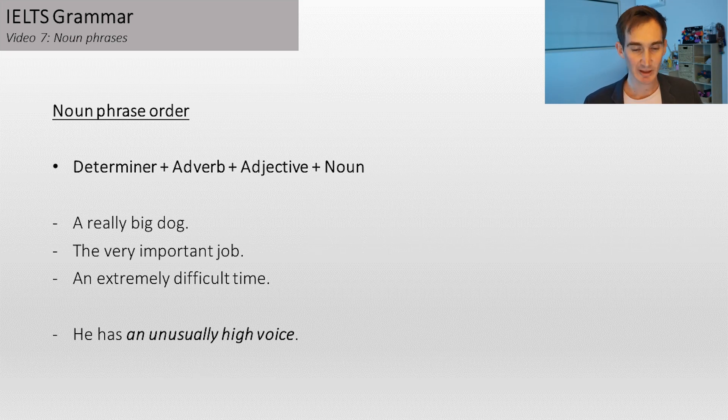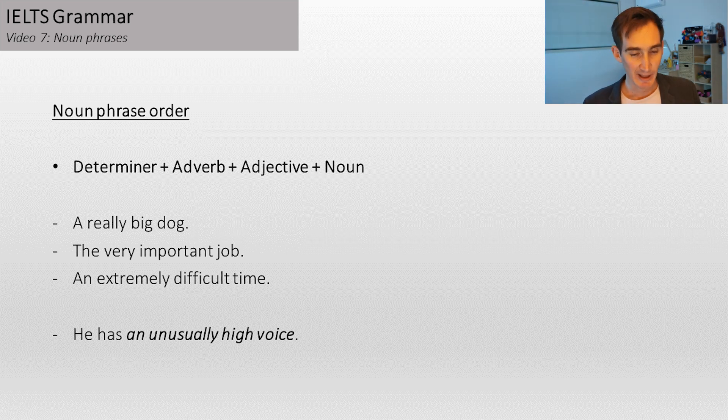With that out of the way, let's now look at how a full noun phrase is constructed. So the standard order, in fact it's always this order, is determiner plus adverb plus adjective plus noun. You might not have all of them in your noun phrase, but if you do, that's the order that they'll be in.